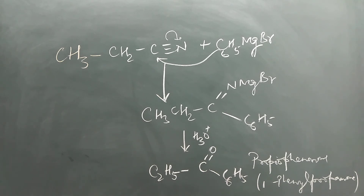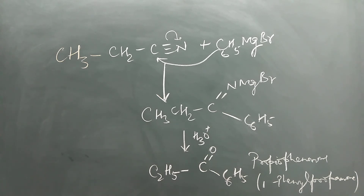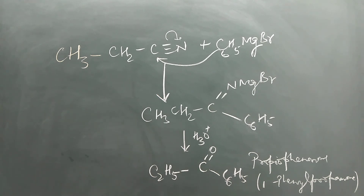Grignard reagent reacts with a nitrile to form an intermediate, which on acid hydrolysis gives a ketone. For example, propanenitrile (CH₃CH₂CN) reacts with phenyl magnesium bromide to give an intermediate which on hydrolysis gives propiophenone, also called 1-phenylpropanone. These reactions are useful for your upcoming exam. Thank you so much.